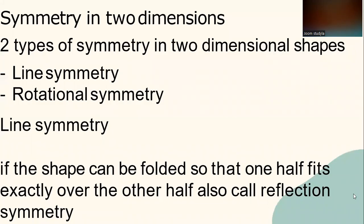Symmetry in two dimensions. Two types of symmetry in two-dimensional shapes: first is line symmetry, and secondly is rotational symmetry. Line symmetry is if the shape can be folded so that one half fits exactly over the other half, also called reflection symmetry.